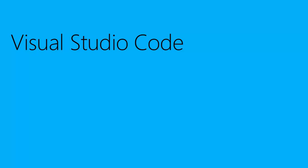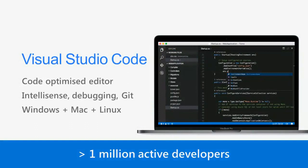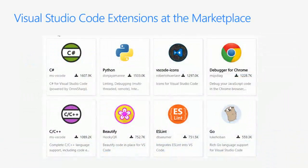Continuing on the Visual Studio family: we now have Visual Studio Code, which is a lightweight editor — as Giles mentioned — downloaded by more than one million active developers. It's a lightweight, cross-platform code editor or IDE you can install on Mac, Linux, or Windows. It supports IntelliSense, debugging, and Git. It has a big and growing marketplace where you can find extensions for TypeScript, Python, icons, and more. You can also develop your own extension to support languages, IntelliSense, themes, or colors.